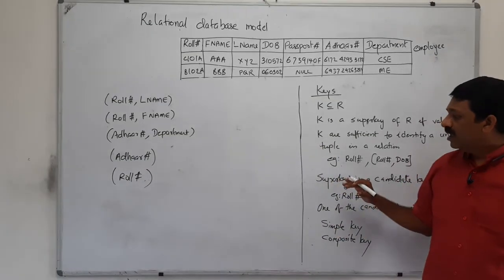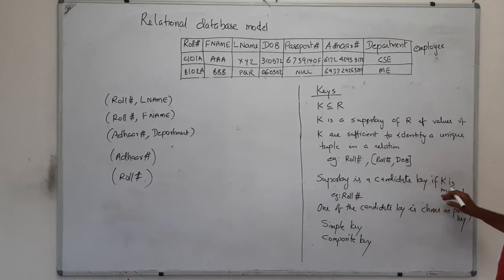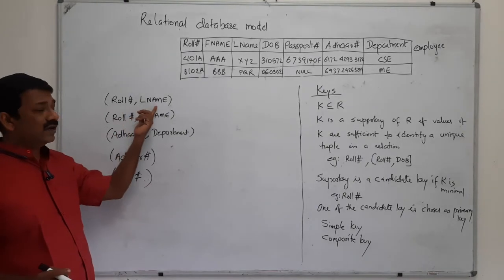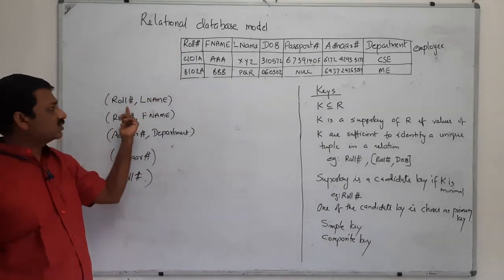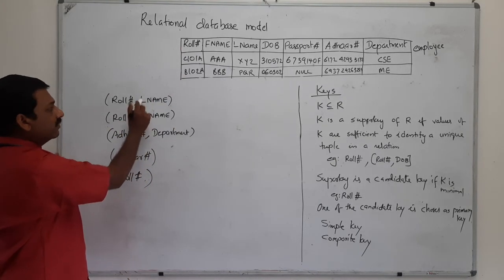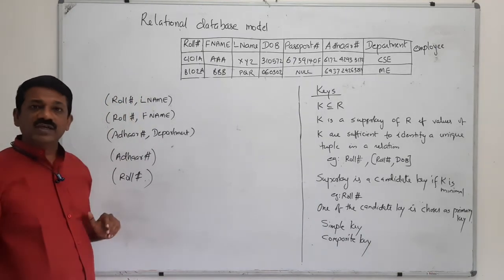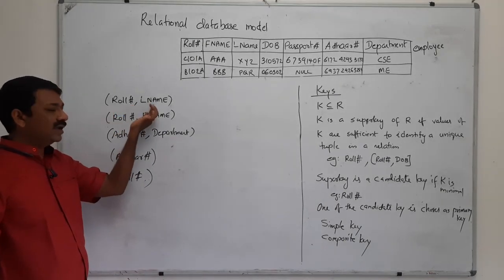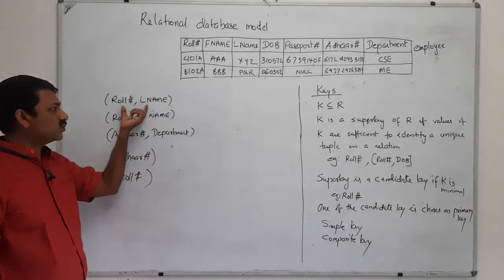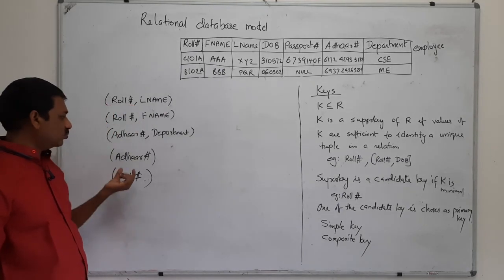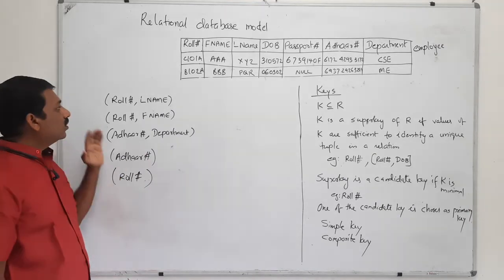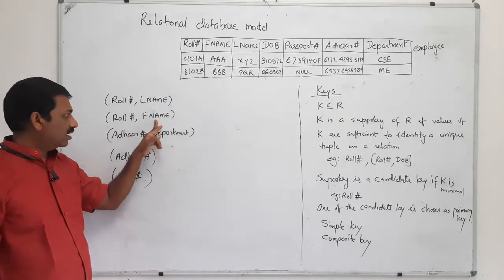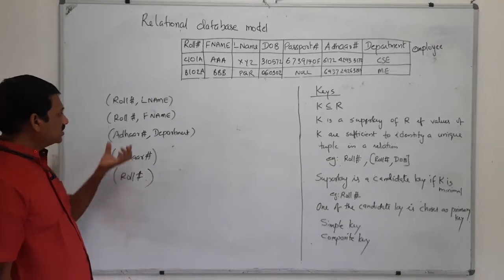Now, we ask: is a super key K minimal? For example, roll number and last name uniquely determine a tuple — it is a super key. But if we exclude last name, roll number itself forms a key. So roll number and last name is not a minimal key. Roll number and first name is also a super key, but we are not interested in it because roll number itself forms a super key.